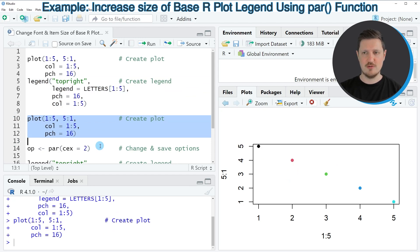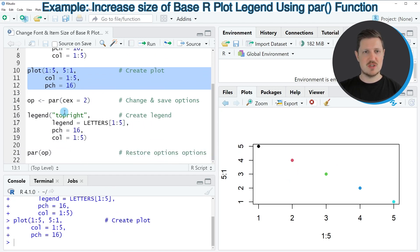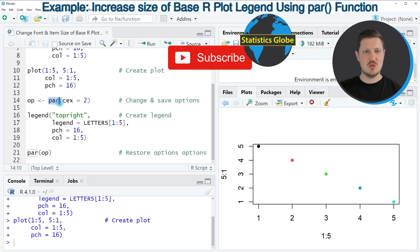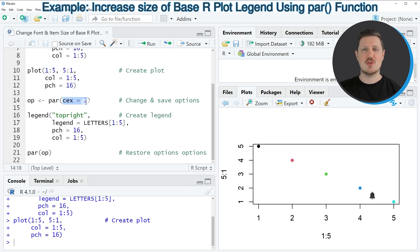For this we first need to recreate our plot once again to show the plot without a legend, as you can see in lines 10 to 12. Then in the next step we have to use the par function, as you can see in line 14. Within the par function we are using the CEX argument to change the size of our legend items and labels. In this case I'm setting the CEX argument to be equal to two. However, the larger this value is, the larger your legend will be. Then I'm storing the output of this function in a new data object that I'm calling OP because I want to restore my default specifications later on.